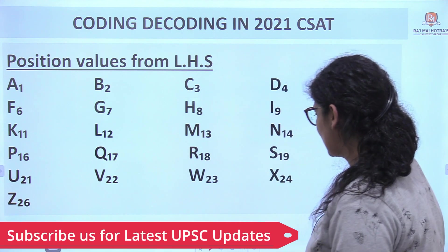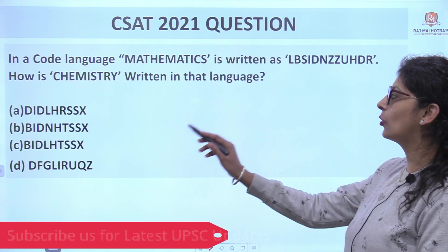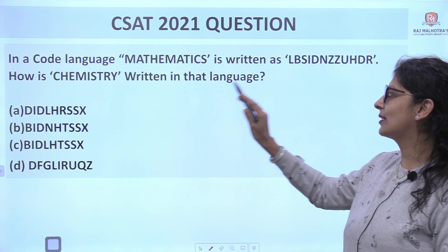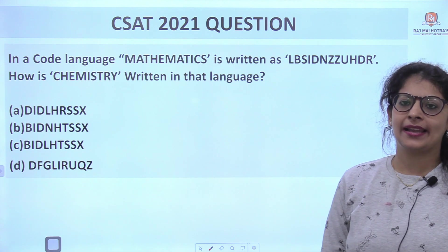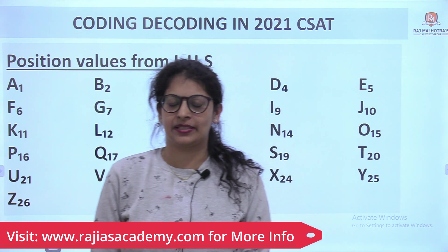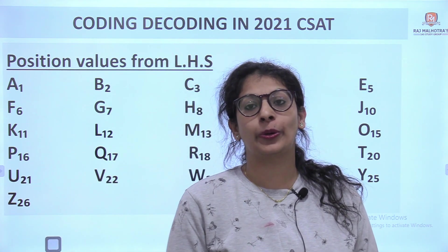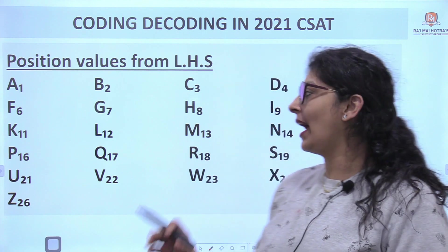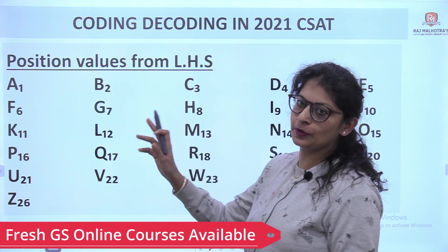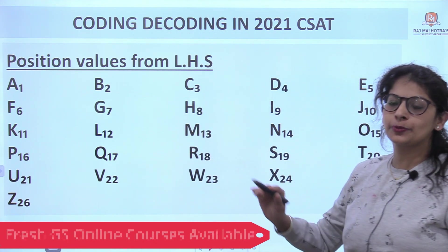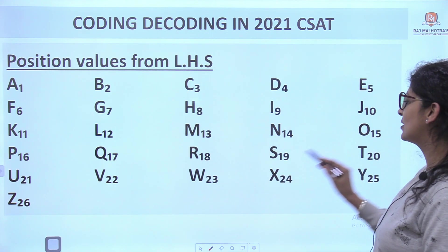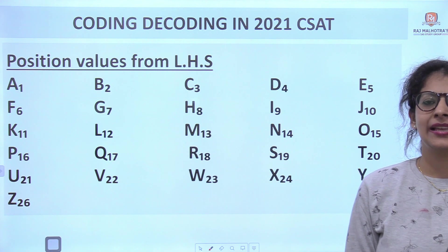The question is: in a code language, 'mathematics' is written as a certain code. How is 'chemistry' written in that language? First of all, we have to learn the position values of alphabets. We have 26 alphabets and 26 position values to learn from left-hand side. A is at first place so its position value is 1, B is 2, C is 3, and so on. Z is 26, the last alphabet.